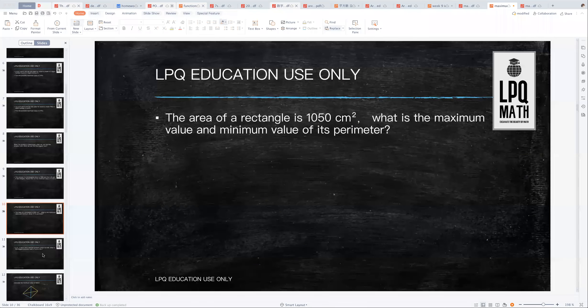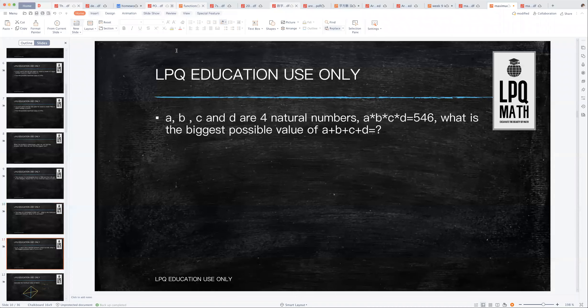Let's take a look at number two. A, B, C, D are four natural numbers. We have learned that natural numbers are integers with no negative and no zeros.